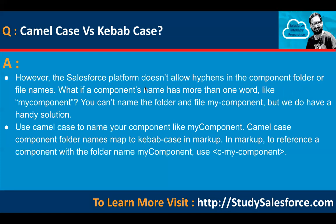However, the Salesforce platform doesn't allow hyphens in component folder or file names. So when you create a Lightning Web Component, the name should not contain a hyphen — it always follows camel case. If a component's name has more than one word, like 'my component', you can't name the folder 'my-component'. Instead, use camel case: 'myComponent' — first word lowercase, second word starts with a capital. Camel case folder names map to kebab case in markup: to reference the component, use 'c-my-component'.